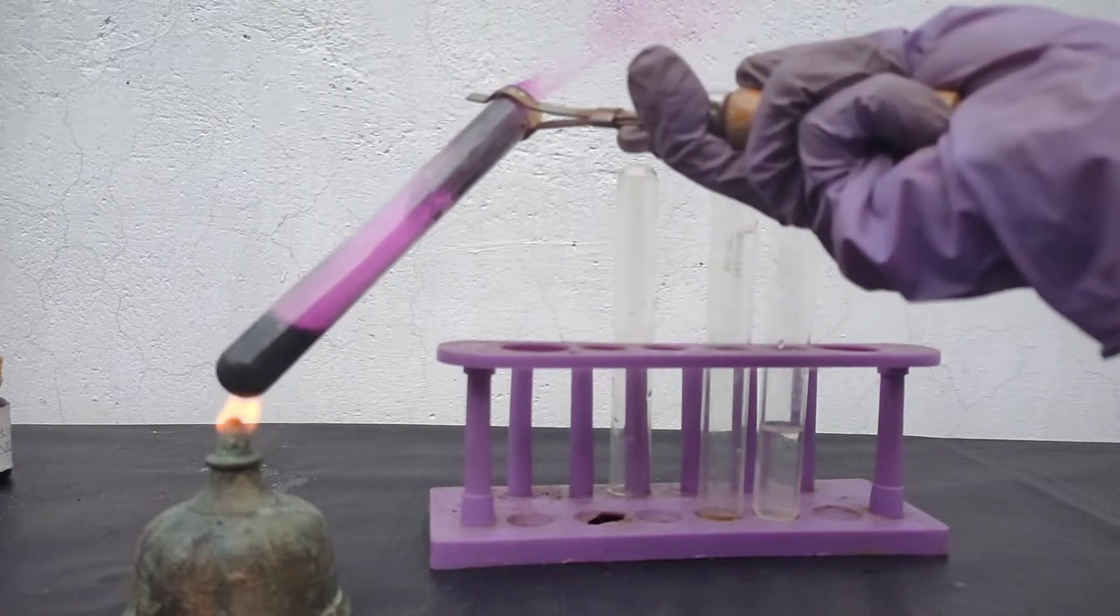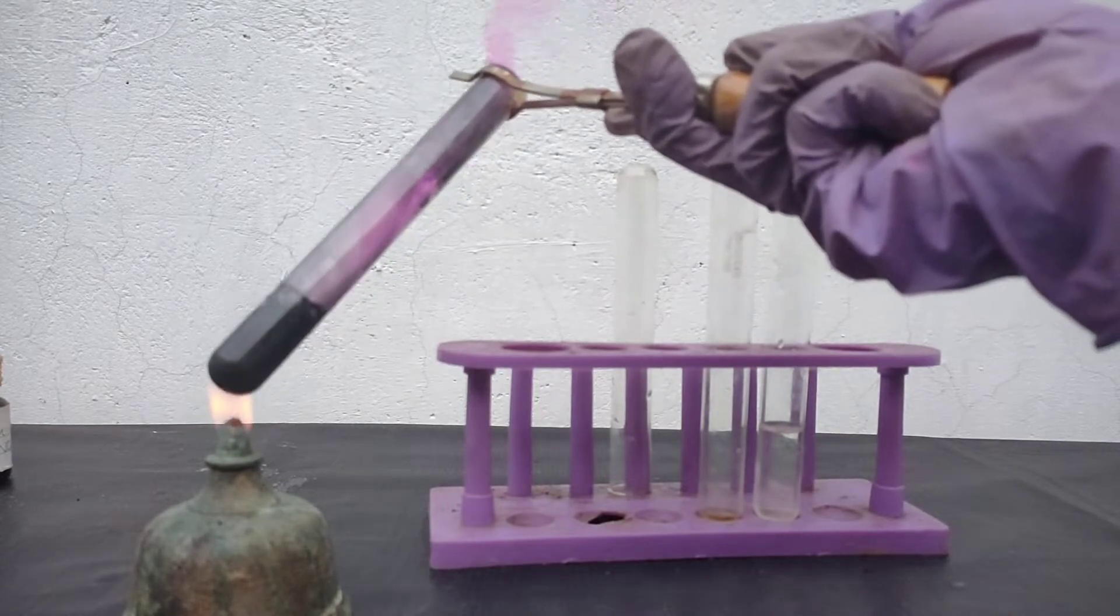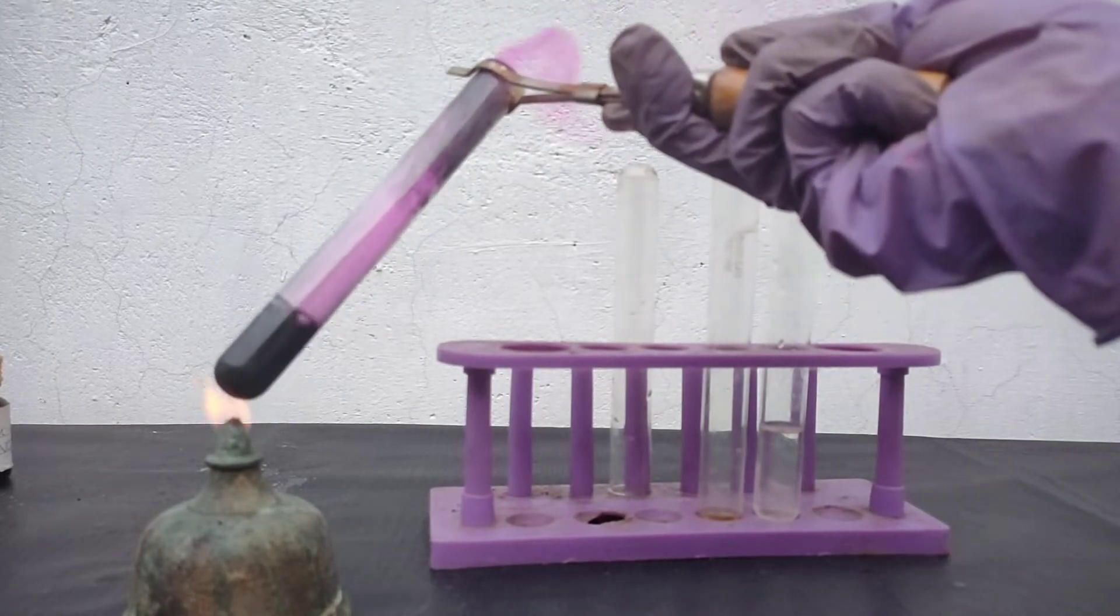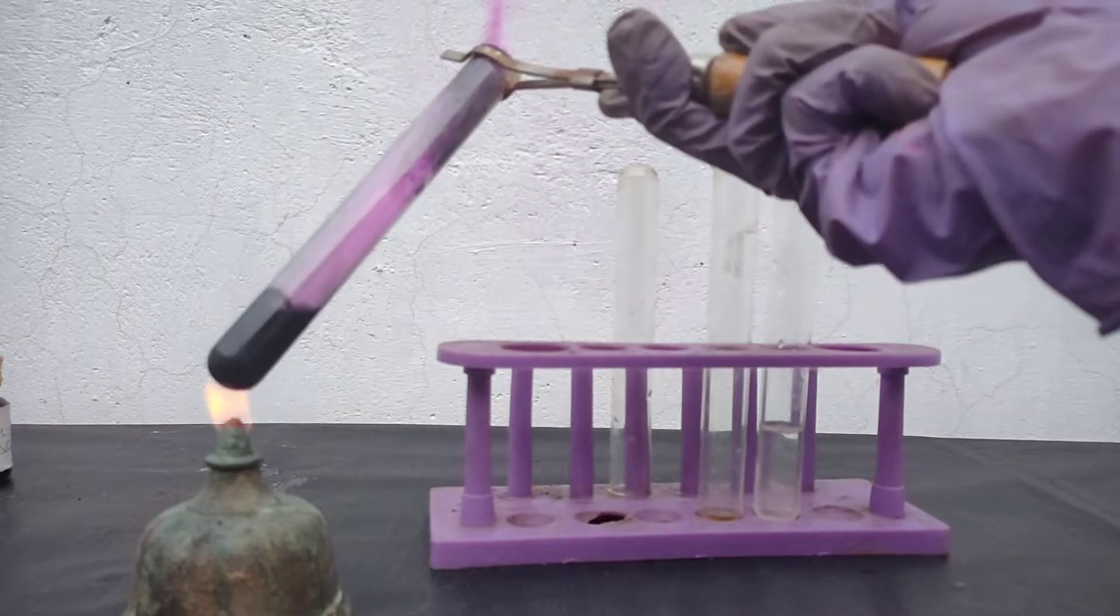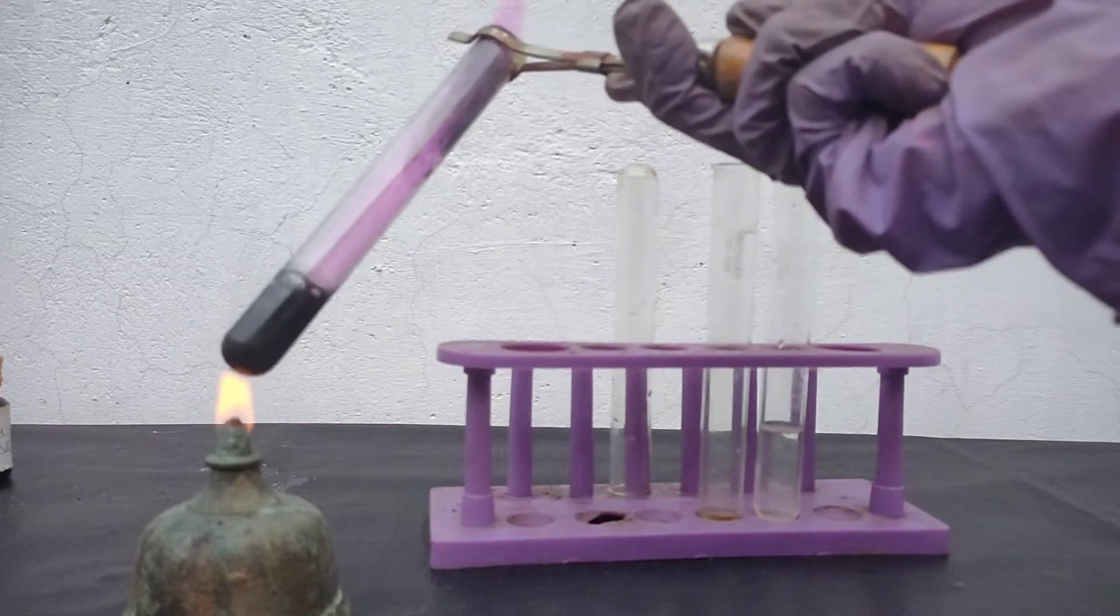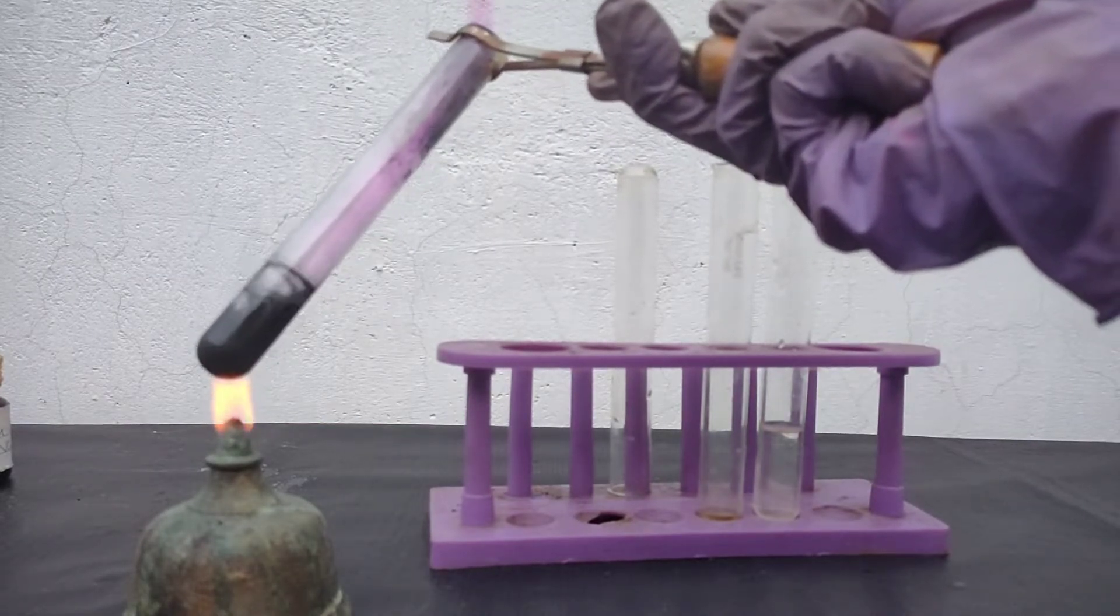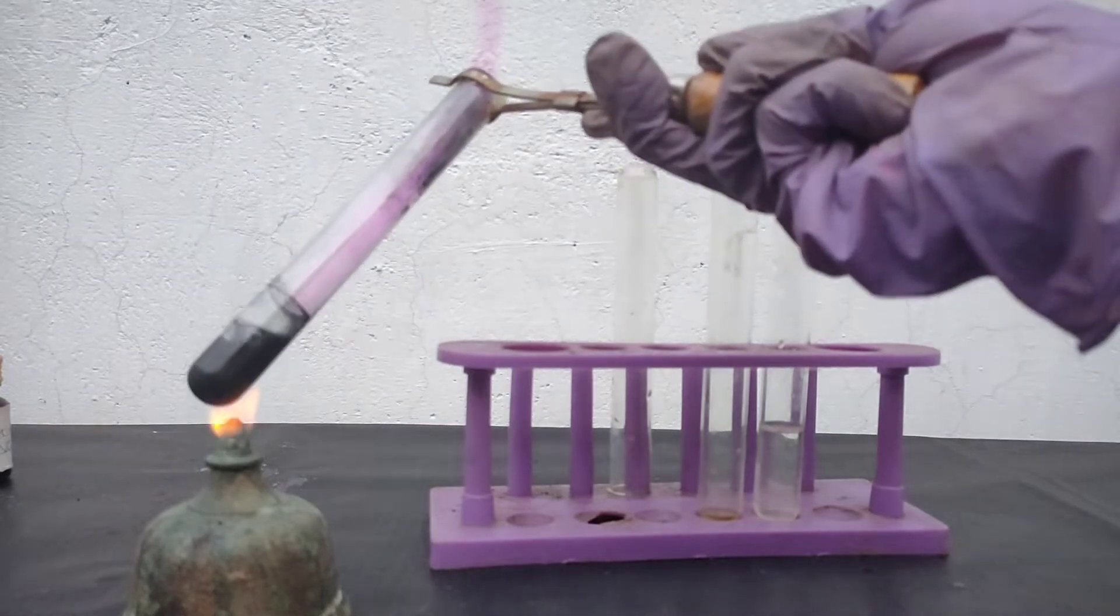On adding manganese dioxide, the violet vapor becomes more clear. Previously it was reddish brown in color, which was due to the presence of hydroiodic acid which was also produced. But now after adding manganese dioxide, all the hydroiodic acid is oxidized to iodine. That's why you see a stream of violet vapor.